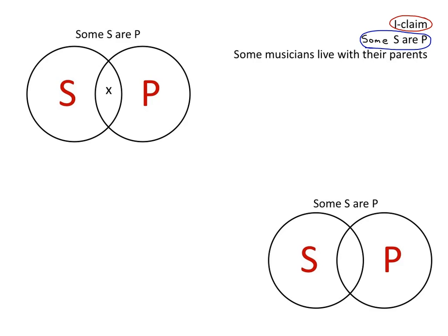Now this is a little different than the earlier ones, and it's because of this term 'some,' which in categorical logic terms means at least one.